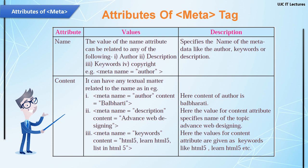For example: meta name='author' content='Balbharti' — here Balbharti is the content for author. Next, meta name='description' content='Advanced Web Designing' — the content specifies the topic name. Next, meta name='keywords' content='html5, learn html5, list' — these keyword values indicate the different subtopics we are going to learn under the main topic, Advanced Web Design.